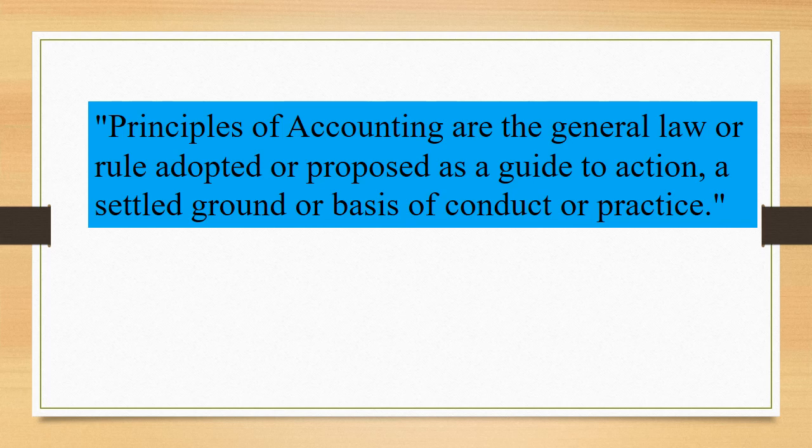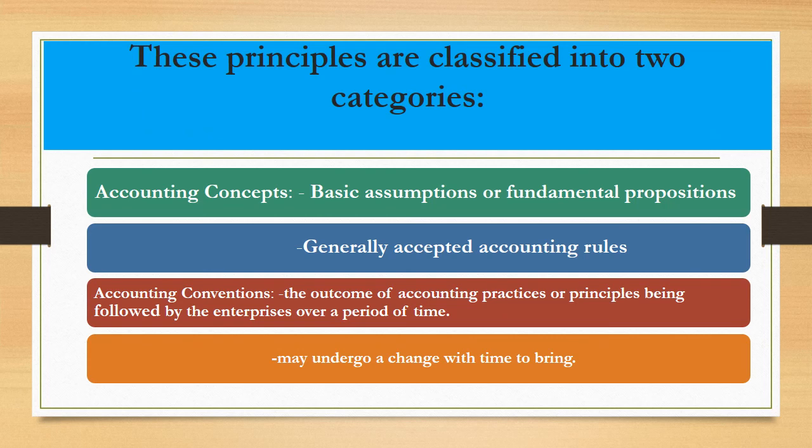Now the question arises: how can we divide these principles? Basically, these principles can be divided into two categories — first, accounting concepts, and second, accounting conventions. Accounting concepts are some basic assumptions or fundamental propositions which are generally accepted as accounting rules. These are fixed in nature and do not easily change.